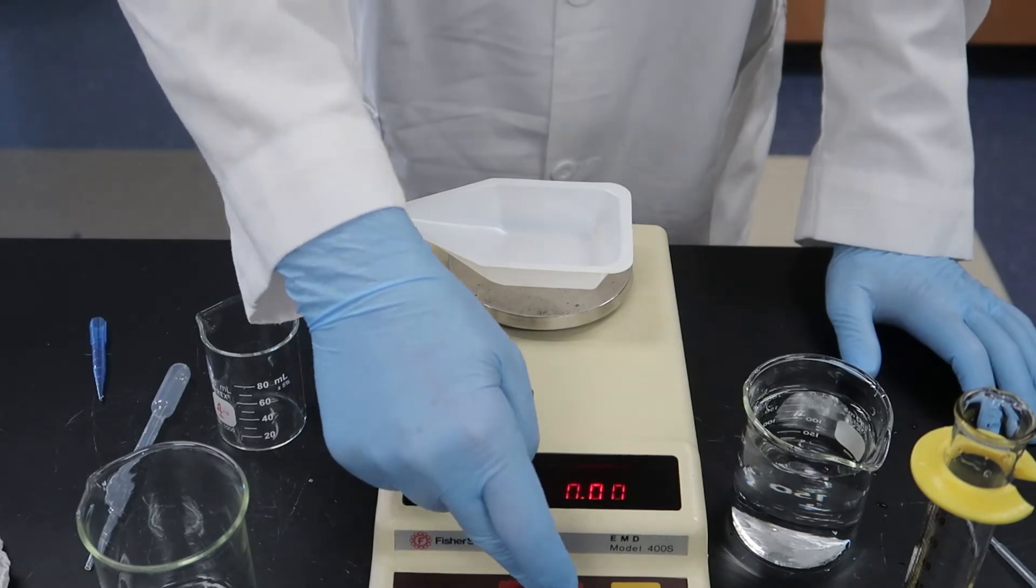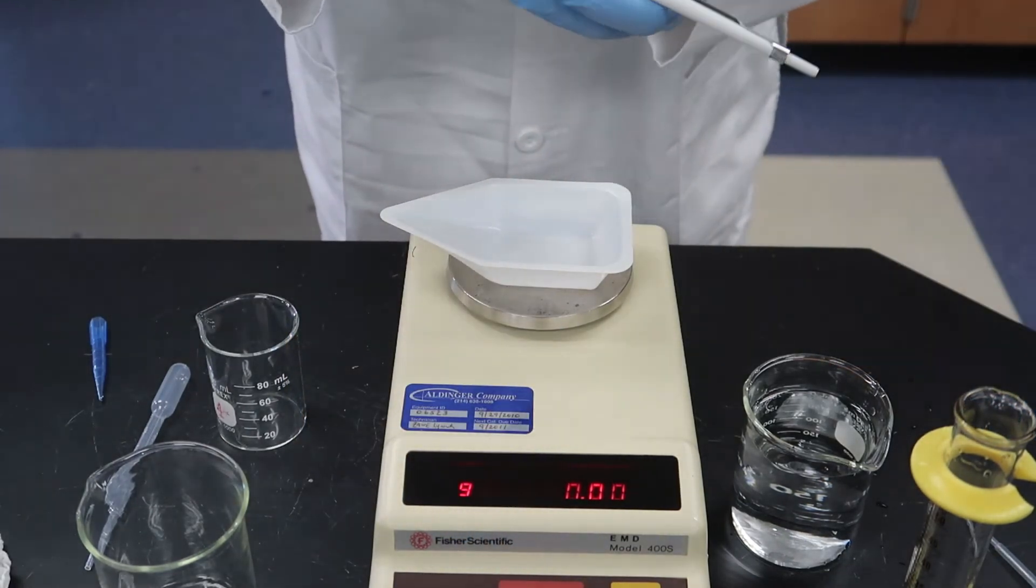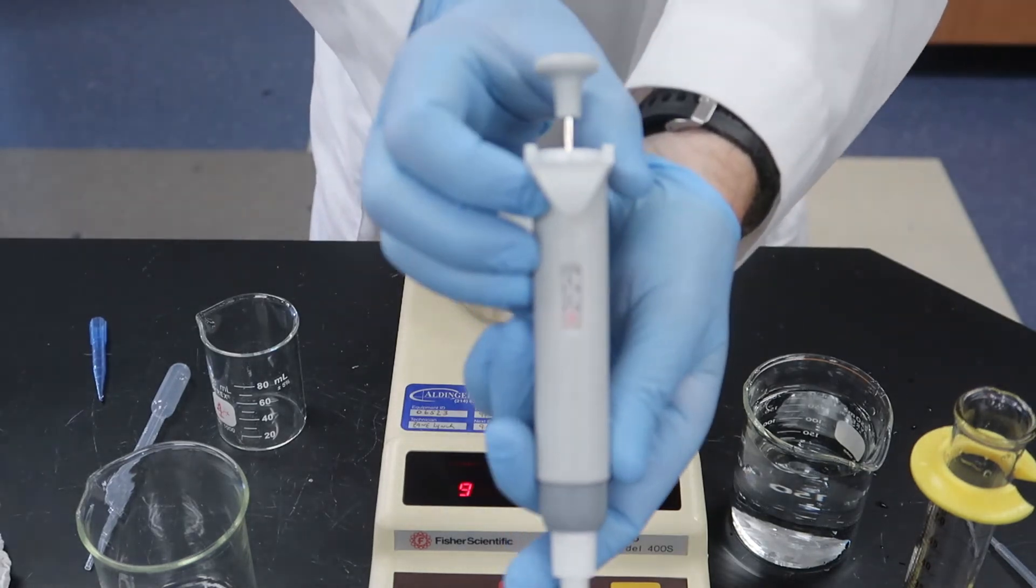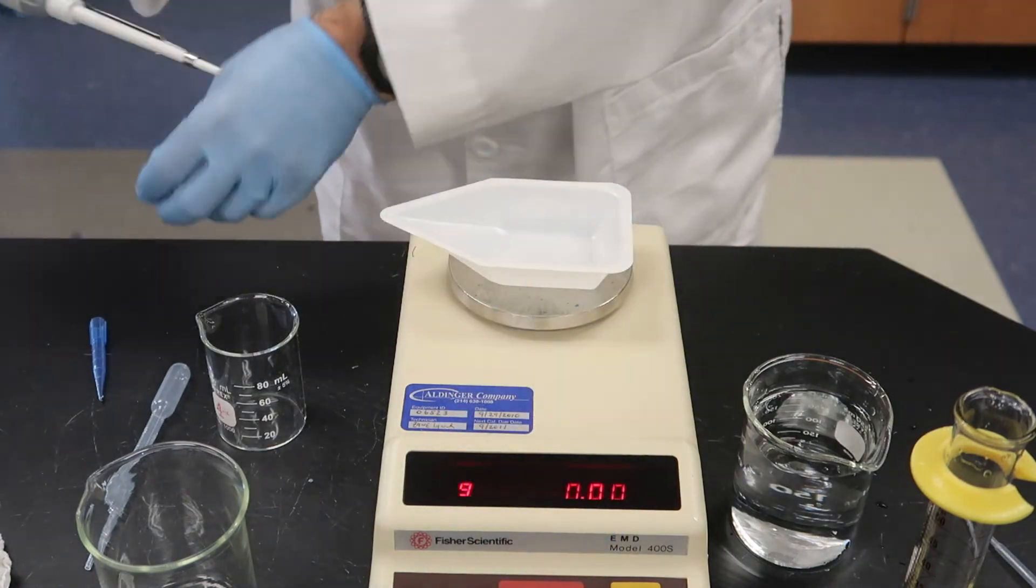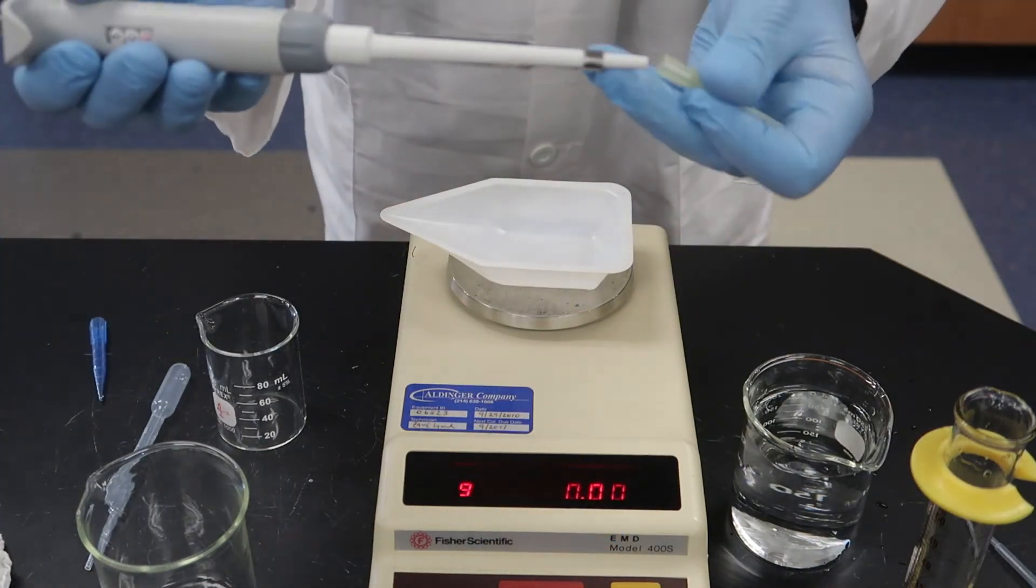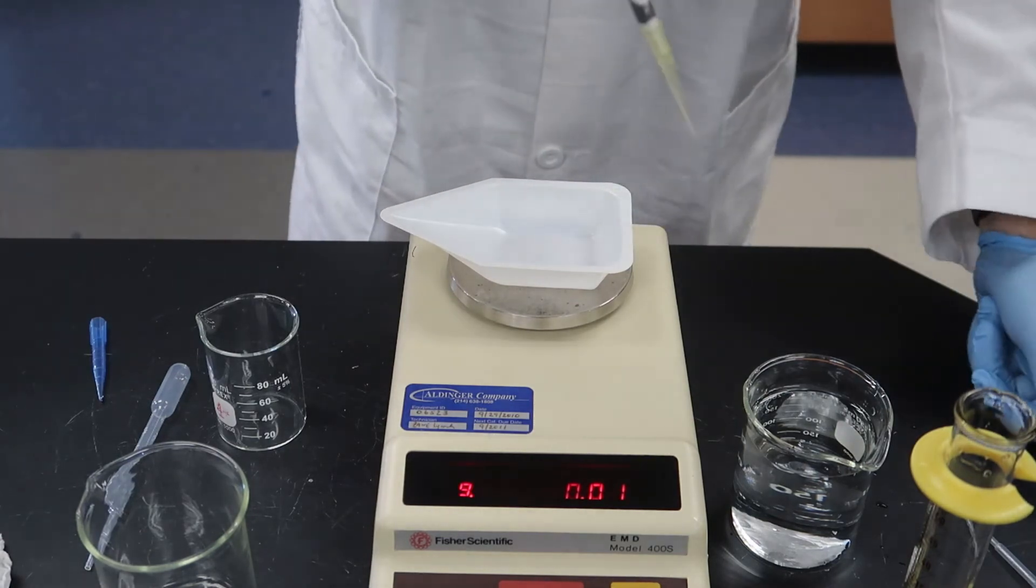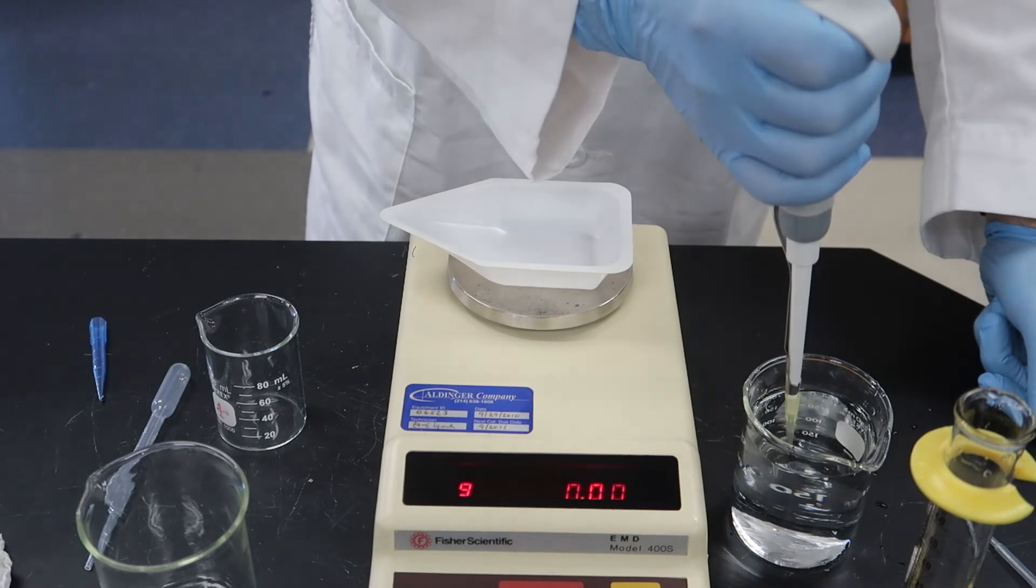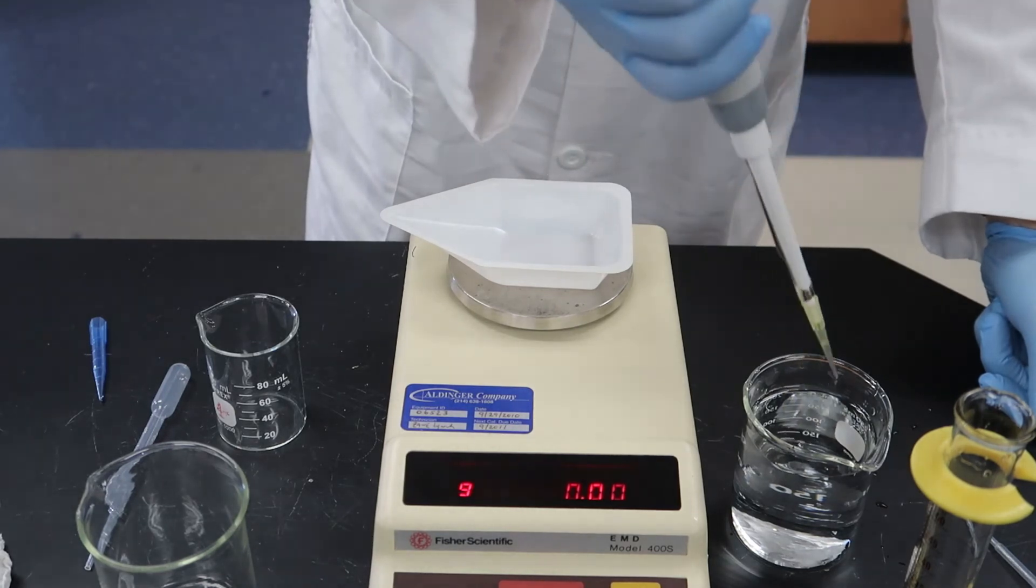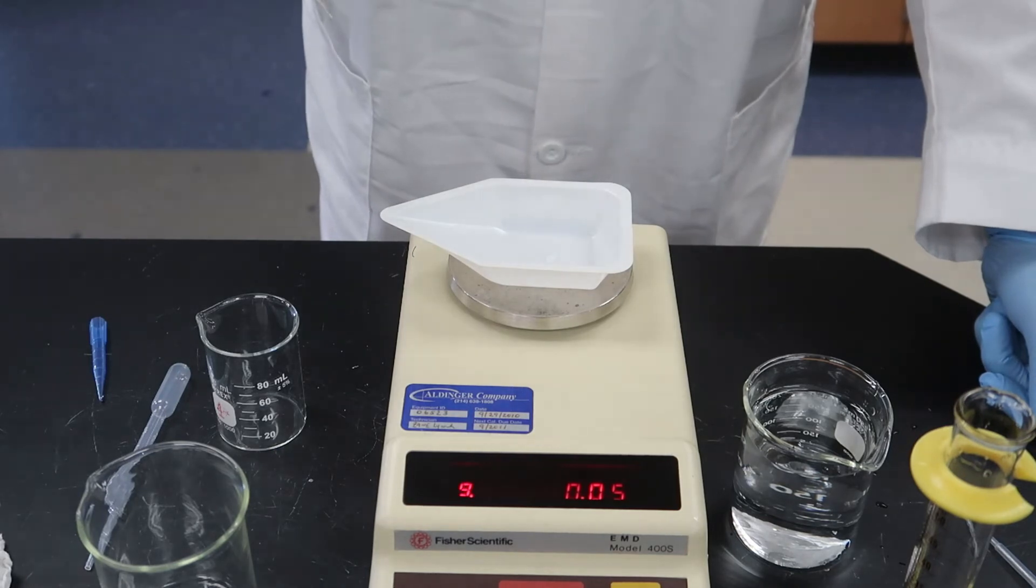All right, our last sample size is 50 microliters, a very small amount. So we're going to switch to the small adjustable micropipette. And you can't see it very well there, but it is set for 50 microliters. And notice we're using a different tip for this one, a smaller yellow tip for smaller volumes. Okay, and it looks like we got 0.05 grams.